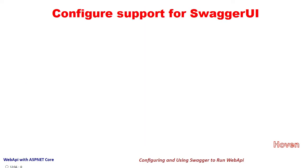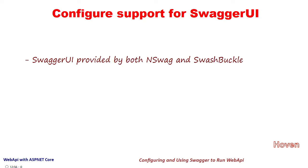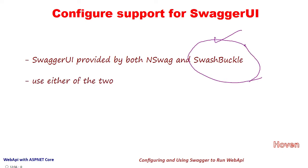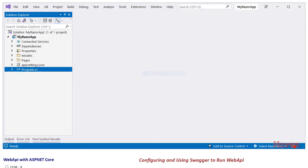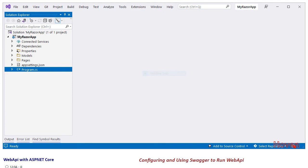Let us now configure our WebAPI project to add support for Swagger UI. As we mentioned earlier, Swagger UI is provided by both Swashbuckle and nSwag. We can use either of the two, and I shall be using Swashbuckle. The process for nSwag is exactly similar. Open the WebAPI project that we have been working on in this chapter, locate the program.cs file, and double-click to open it.